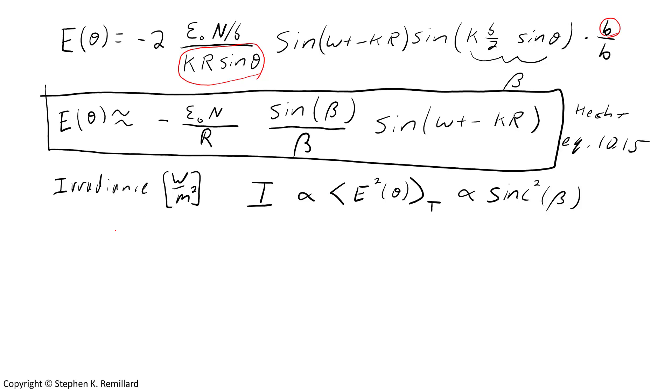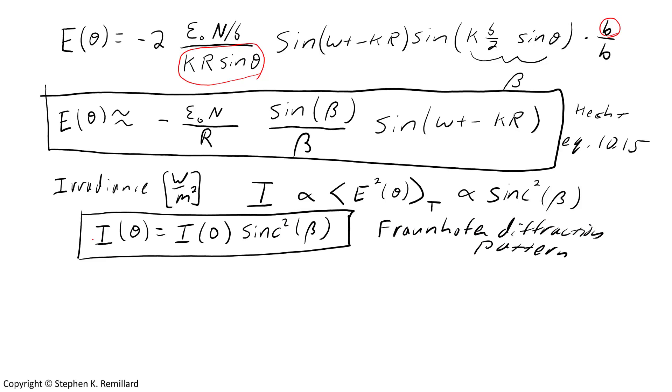Sine beta over beta is sinc of beta. Whenever you have a proportionality, there's a proportionality constant. Intensity is whatever the intensity is when theta, hence beta, is zero, times the sinc squared. And this is the Fraunhofer diffraction pattern, which is more appropriately written in a red box to indicate its importance.